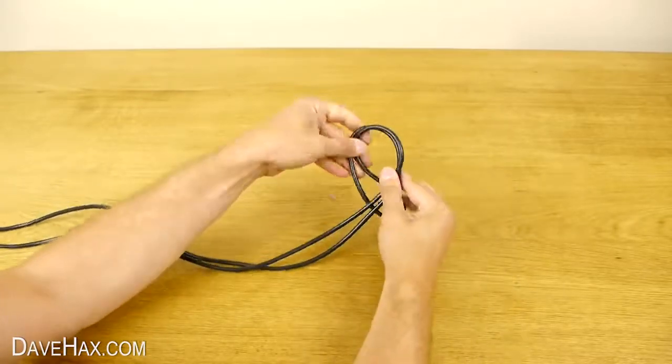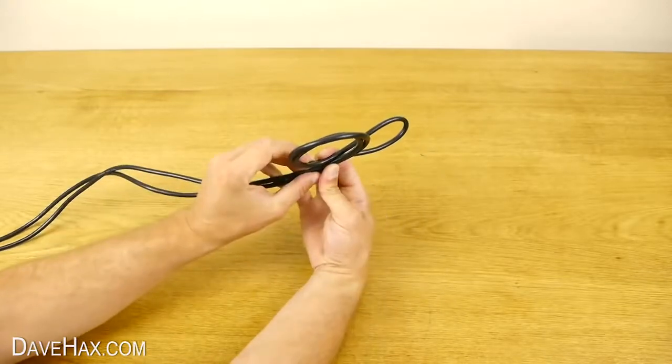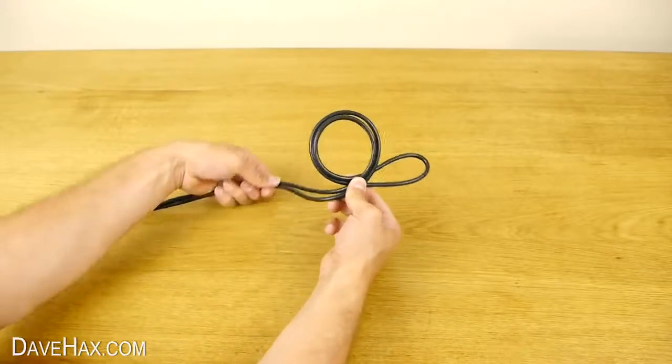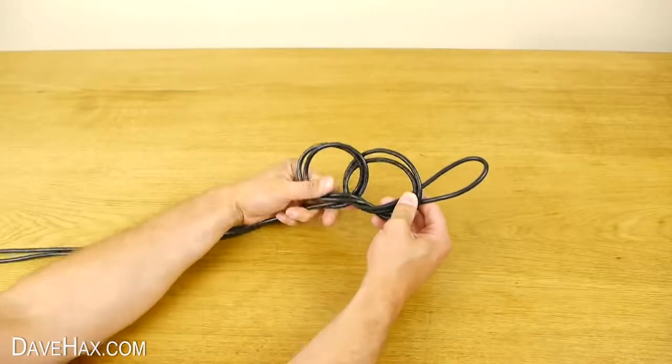Then loop the cable around behind itself and hold it like this. Then take the cable with your left hand, tuck it in through the hole and pull it to the front like this.